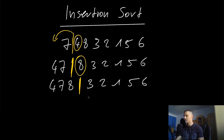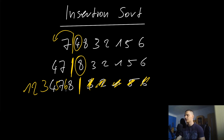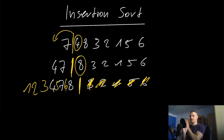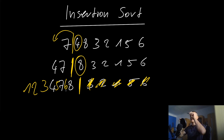We continue: three goes in, then two, then one, then five, then six — each element inserted into the correct position in the sorted section. What we're doing is placing a flag at a certain index: on the left side we have the sorted list, on the right side the unsorted list. In the beginning the sorted list is just one element, because one element is always sorted. Then we pick the next element, insert it into the right position, and repeat until we have a fully sorted list.